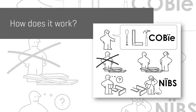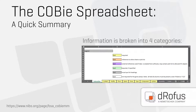Now that we have a better understanding of the intent, let's dive into how it works. Because the format settled on was XML, the most common readable way it gets displayed is through the COBE Excel spreadsheet. While the Excel spreadsheet is in no way the best way to collect the data, it is the best way to understand the data structure. You can download a copy from the NIBS website. Basically, the spreadsheet is comprised of multiple worksheets that represent different data tables that are interconnected.